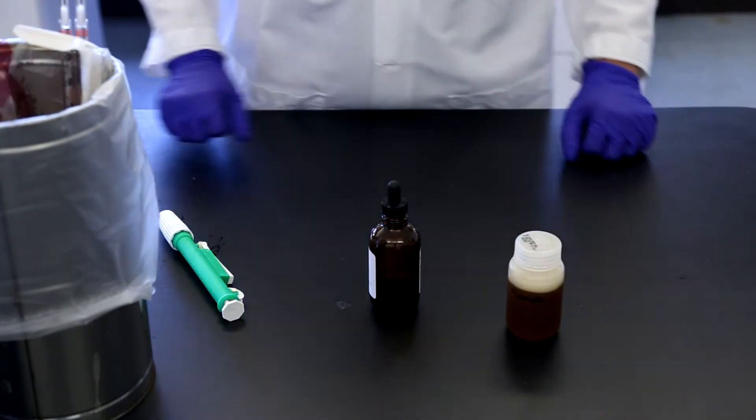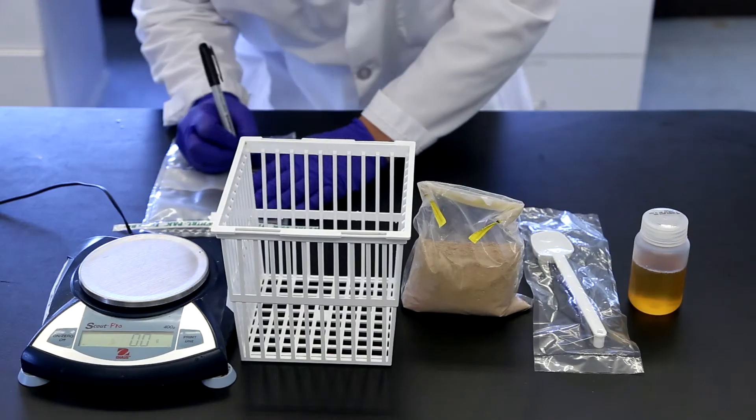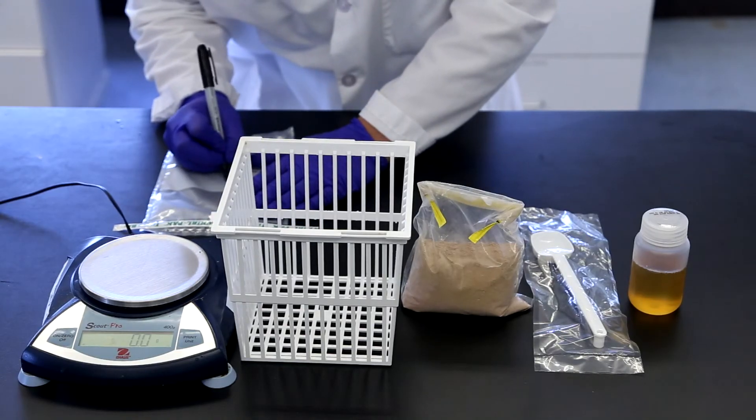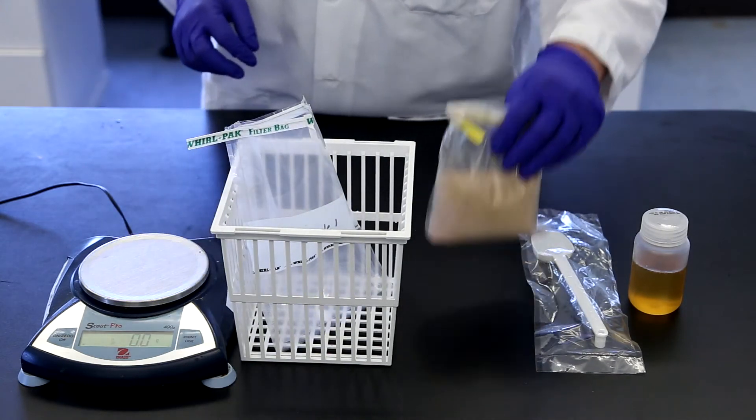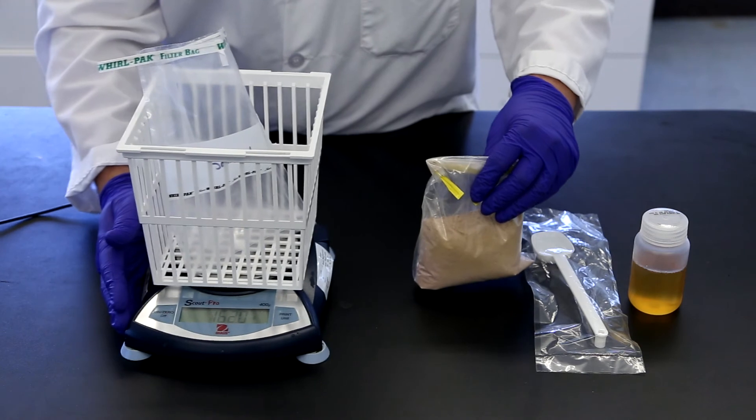To prepare a solid sample, label the sample vessel with a unique ID and place it in a sample basket. Place both on a scale and tare it.